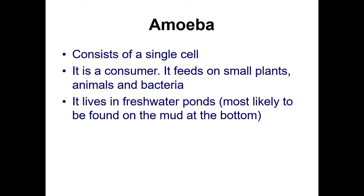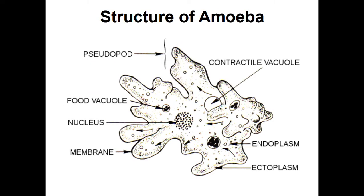Amoeba cannot prepare its own food — it doesn't have chlorophyll so it can't do photosynthesis. Amoeba is a unicellular organism and it basically feeds on small plants, animal cells, and even small bacteria. You can find amoeba in normal lakes or ponds, and it will be found in the sediment at the bottom of the soil.